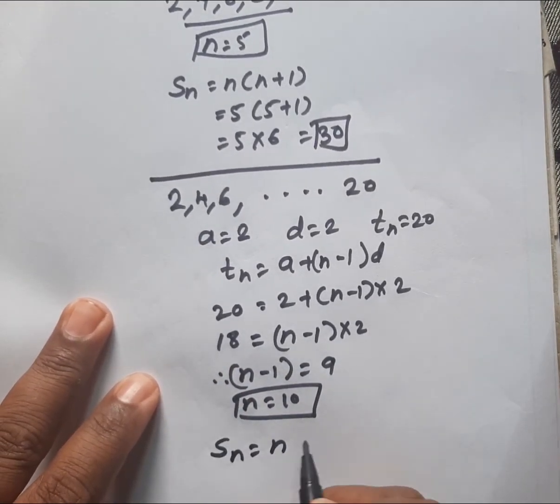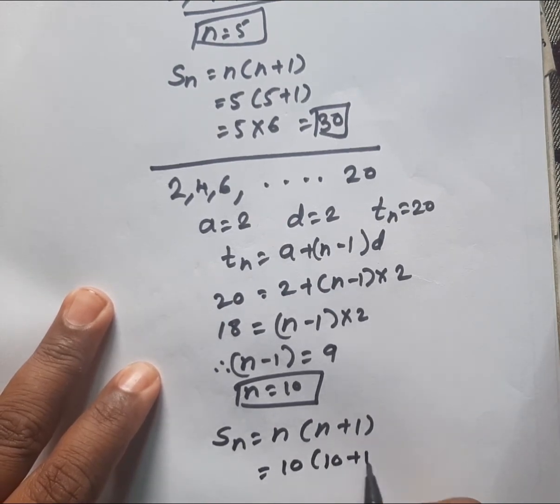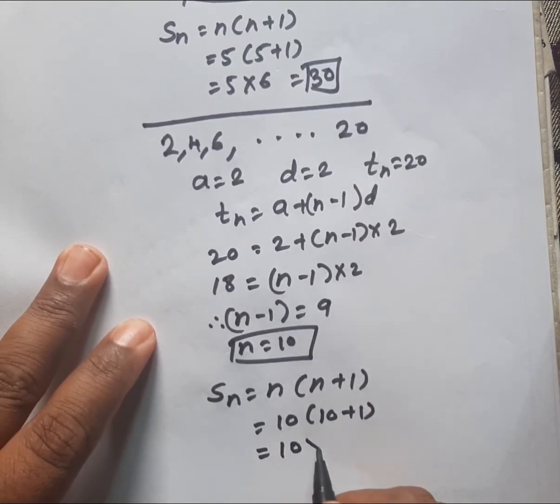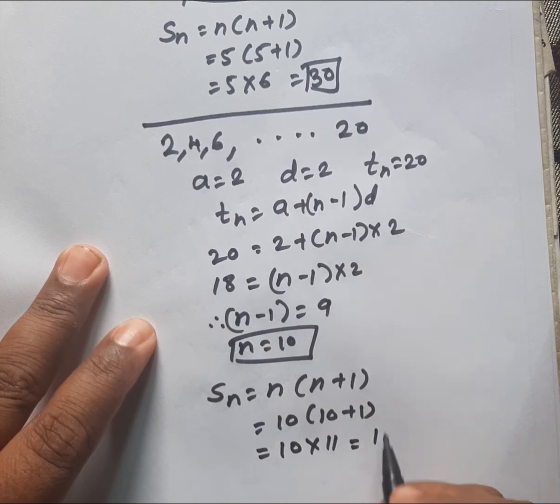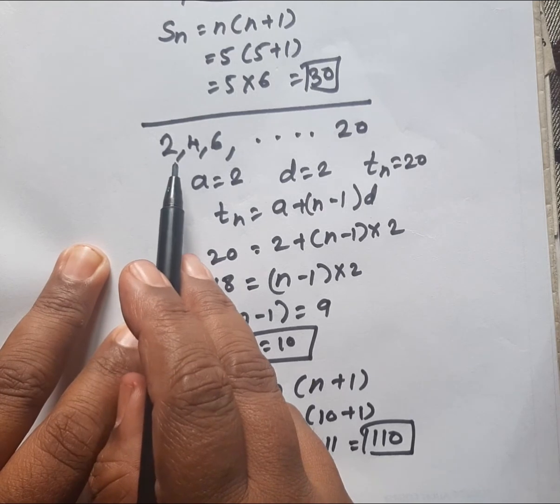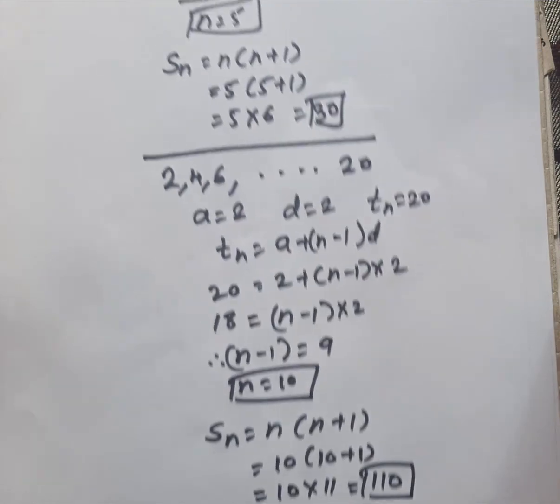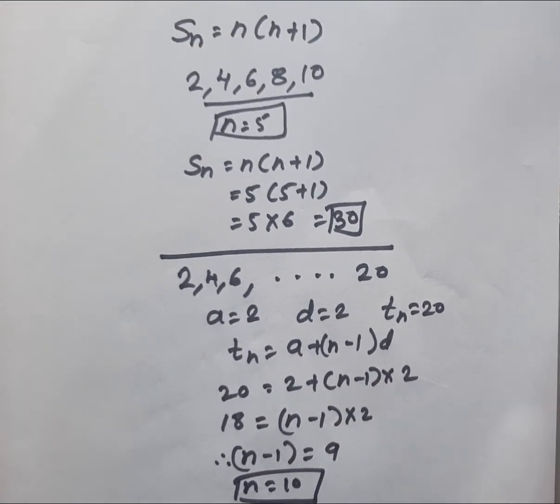That is 10 times 10 plus 1, which equals 10 multiplied by 11 equals 110. The sum of the first 10 even natural numbers is 110. Understand? Thank you.